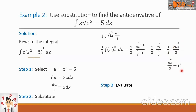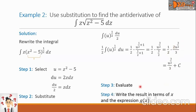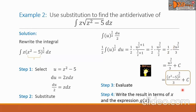We write plus C. Step 4: Write the result in terms of x and g(x). The value of u from Step 1 is z squared minus 5. So we have the quantity z squared minus 5, raised to 3/2, all over 3, plus C. This is the final answer.